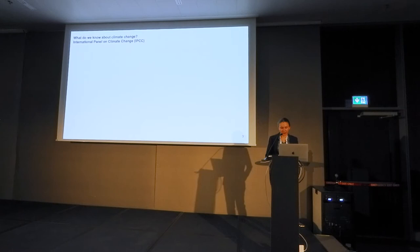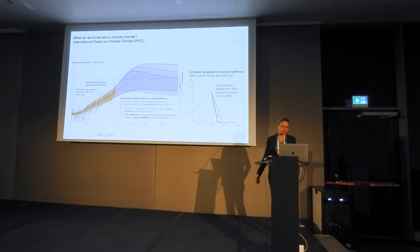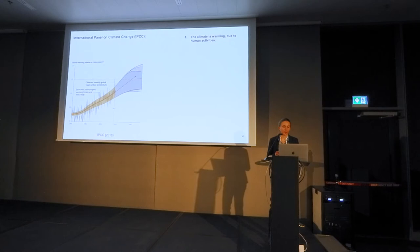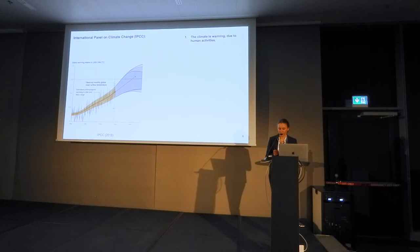I'm going to walk through a plot from one of their more recent reports to introduce three key facts about climate change. The first point is the climate is already warming, and this is due to human activities, in particular CO2 emissions. This plot shows the temperature increase with respect to pre-industrial levels — zero on the y-axis is the mean global temperature before we started burning fossil fuels. By now, the climate has warmed by about one degree, and if the trend continues, we will see a lot more warming pretty soon.